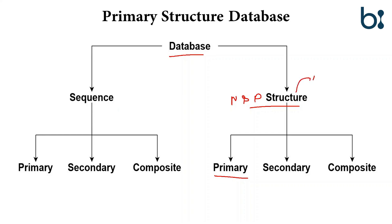If we take the nucleotide, then the structure of the tRNA, structures like Z-DNA or B-DNA, the orientation, the coiling, the folding of the DNA — how they are coiled and how the structure is formed — comes in the structural database.